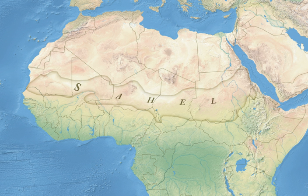The Sahel states were hindered from expanding south into the forest zone of the Ashanti and Yoruba peoples, as mounted warriors were all but useless in the forests and the horses and camels could not survive the heat and diseases of the region.